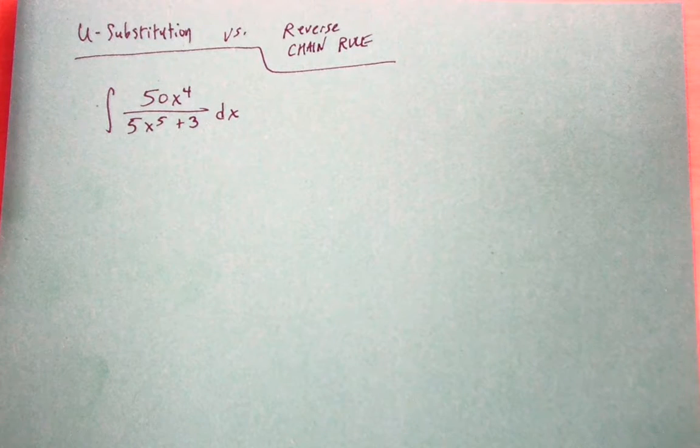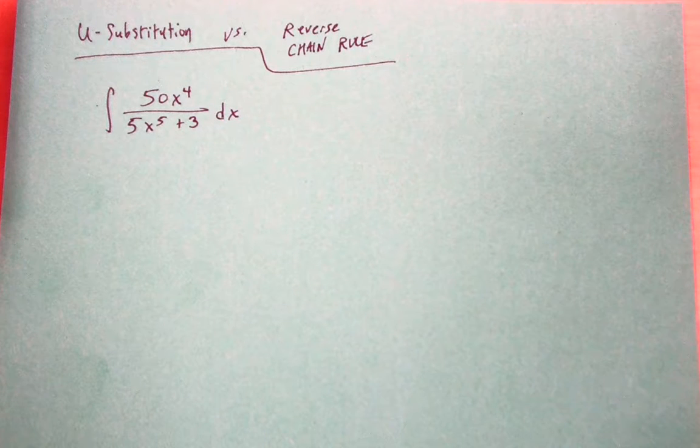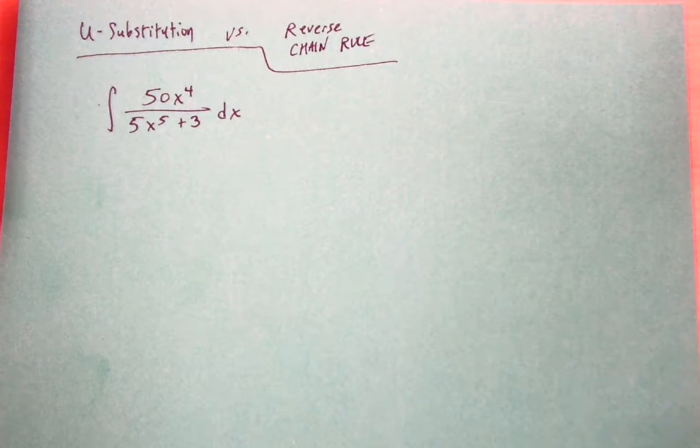So I want us to work through this particular problem in two different methods. I'll try to show you both methods and you can kind of pick for yourself the advantages and disadvantages of both methods.